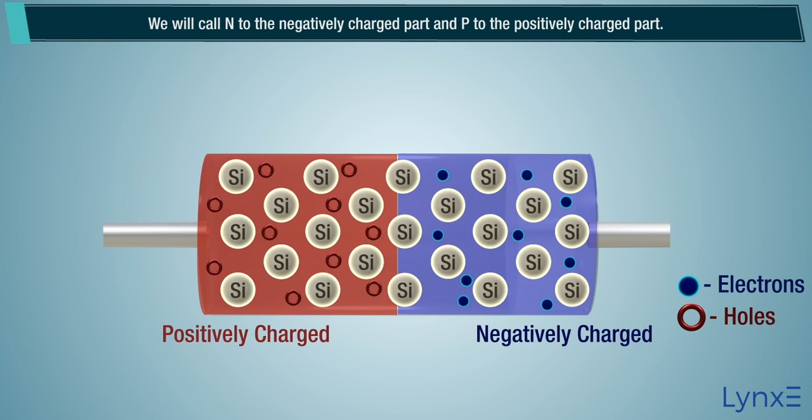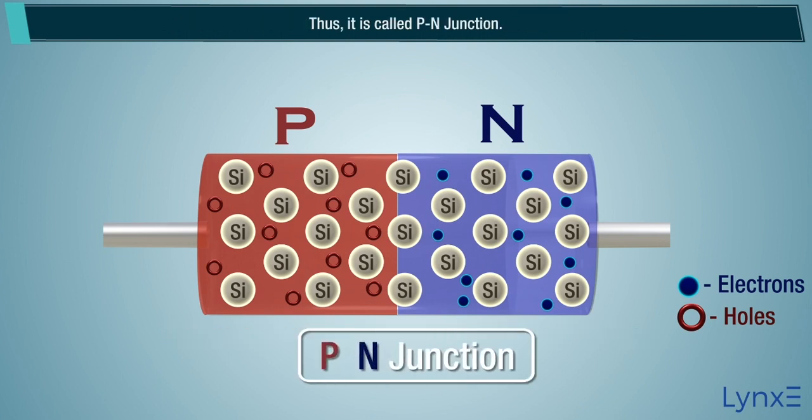We will call N to the negatively charged part and P to the positively charged part. Thus, it is called P-N junction.